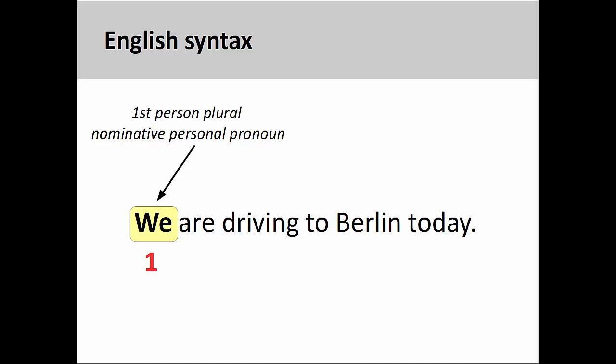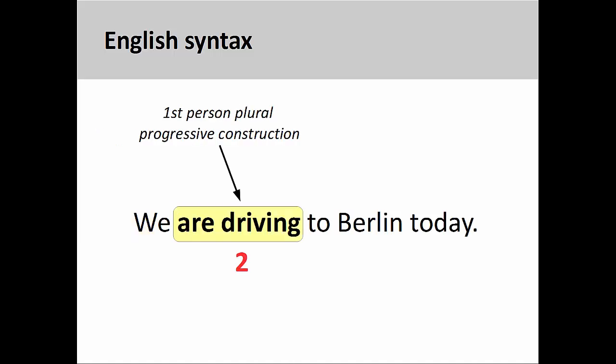In English statements, the subject generally comes in the first position. Here the subject is the first person plural nominative personal pronoun, we. The verb, here a first person plural progressive construction, comes in the second position. The progressive construction in English describes an ongoing event and consists of a conjugated form of the verb to be in the present participle of a verb.